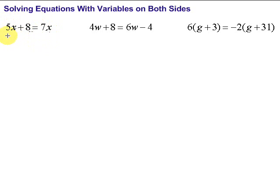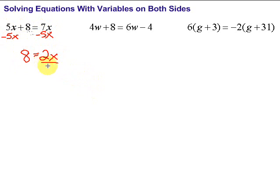So we're going to subtract 5x from both sides because we had a positive 5x. These cancel out, and we bring down what we have left: 8 equals 7x minus 5x, which is 2x. Now this should look familiar — we have 2 times x, and the opposite of multiplication is division. So we divide by 2 on both sides. 8 divided by 2 is 4, the 2's cancel out, and we're left with x equals 4.